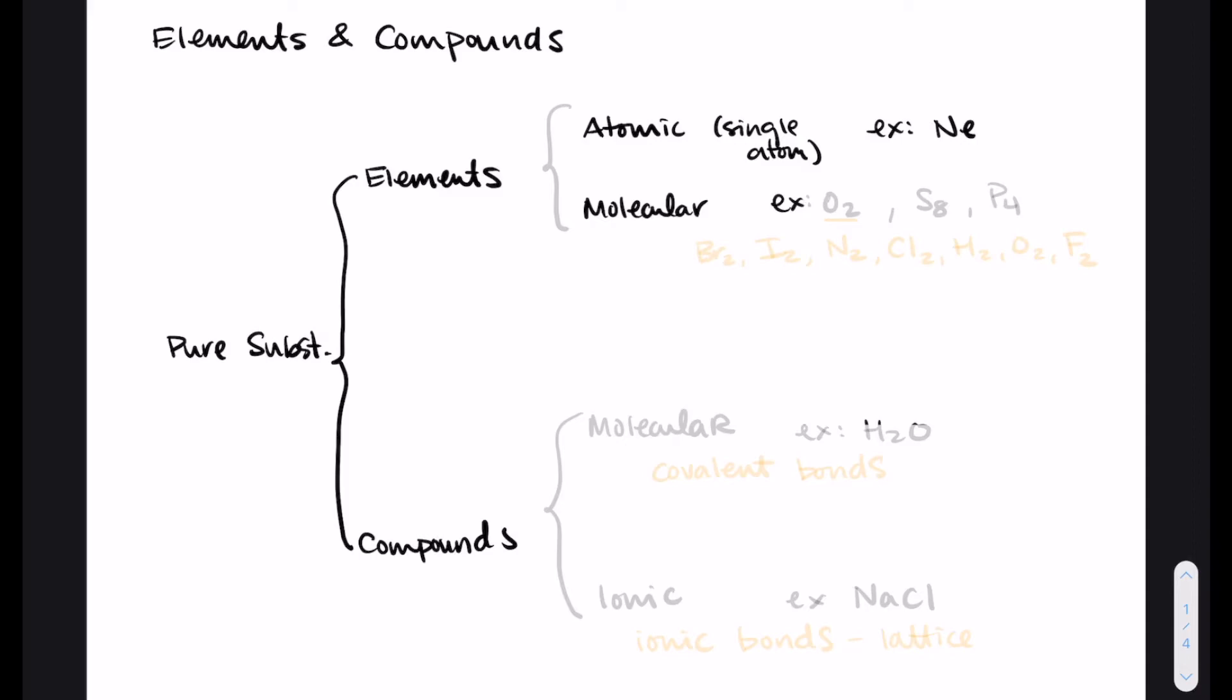Elements can also exist as molecules. So oxygen is an example. Elemental oxygen exists as O2, which is two oxygen atoms connected to each other. Sulfur as an element exists as eight sulfur atoms connected to each other. In phosphorus, it's P4, so four phosphorus atoms connected to each other. This is just how you would find it. If you had a sample of elemental oxygen, it would be a bunch of O2 molecules in that sample.